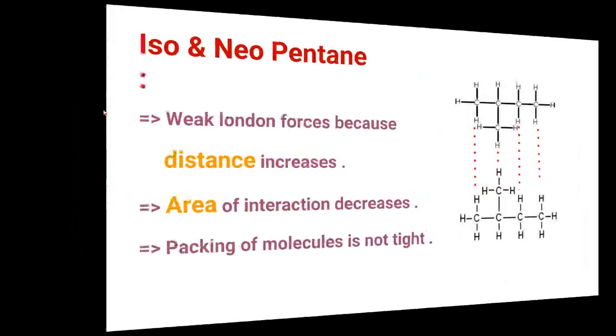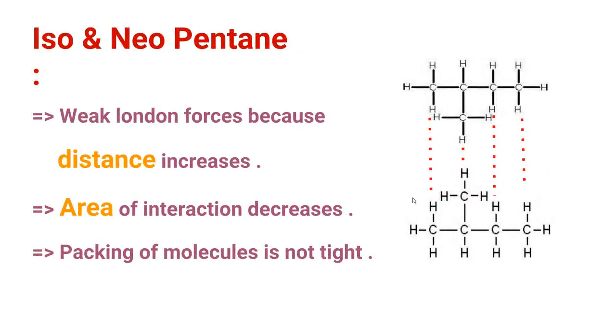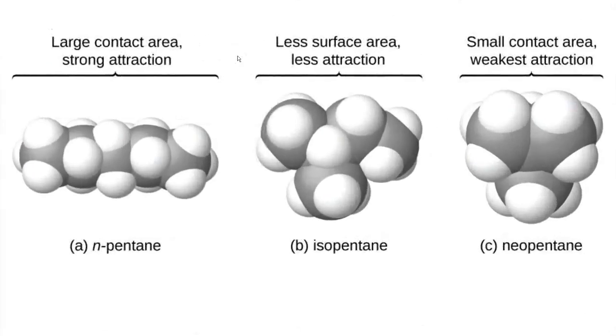But in the case of iso pentane, it decreases, it's less. And in the case of neopentane, it gets even lesser. As you can see here, diagrammatically, in the normal pentane, large contact area, so there is strong attraction.